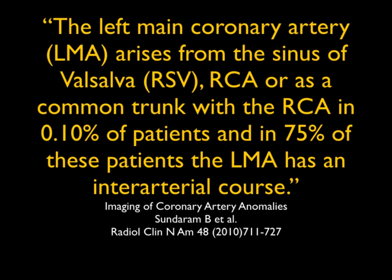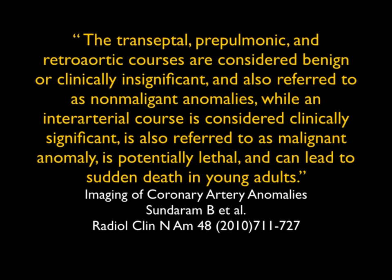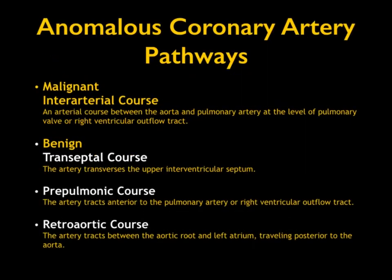This matches very nicely. There are numerous pathways for the left main coronary arising from the right: between the aorta and pulmonary artery as in this case, upper ventricular septum, anterior to the PA, or between the aorta and left atrium — four pathways total. But the one of concern in this case, and typically of concern, is interarterial. The other three are considered clinically insignificant, with interarterial being considered significant — often referred to as a malignant anomaly.